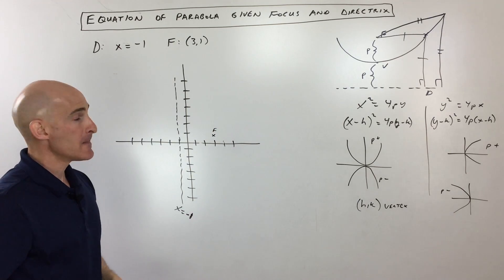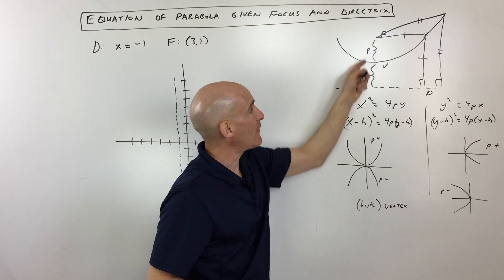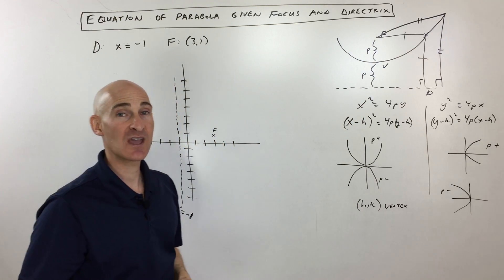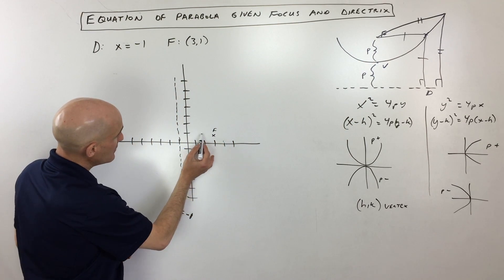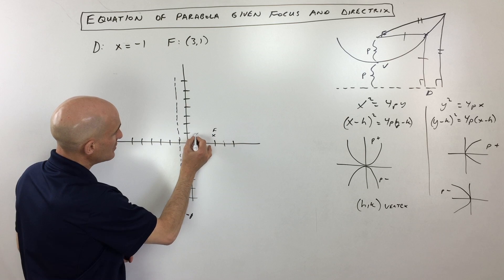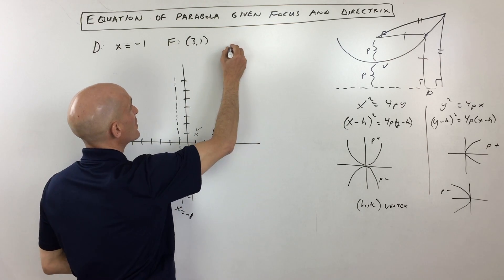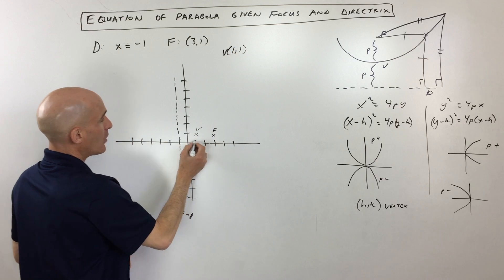And then the focus is at three one, which is right there. I'll just label that the focus. Now the thing to realize is that the vertex is halfway in between the focus and the directrix. So if we find that midpoint, you can see that's going to be right here at one one. So let me just write that down—the vertex is at right one, up one.